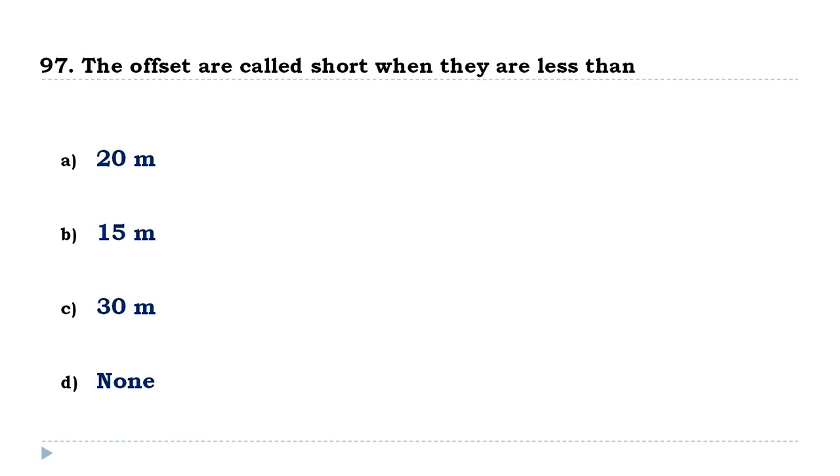The offsets are called short when they are less than 15 meters.